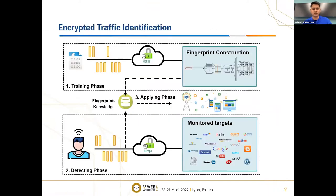According to the Google Transparency Report, global encrypted traffic has reached over 90% in November 2021. Encrypted communications use encryption to protect users from malicious spying, but network traffic detection faces challenges. Encrypted traffic identification is a solution for this issue, which can identify applications a user has visited using fingerprint features such as packet size. We demonstrate the technology in three phases.